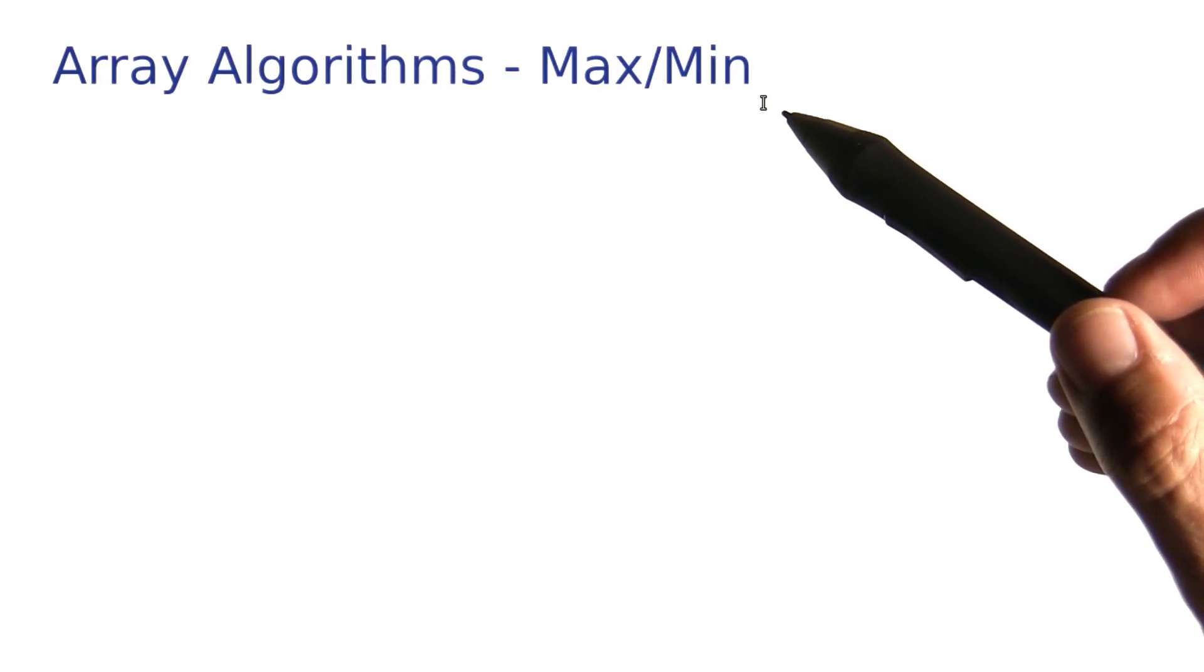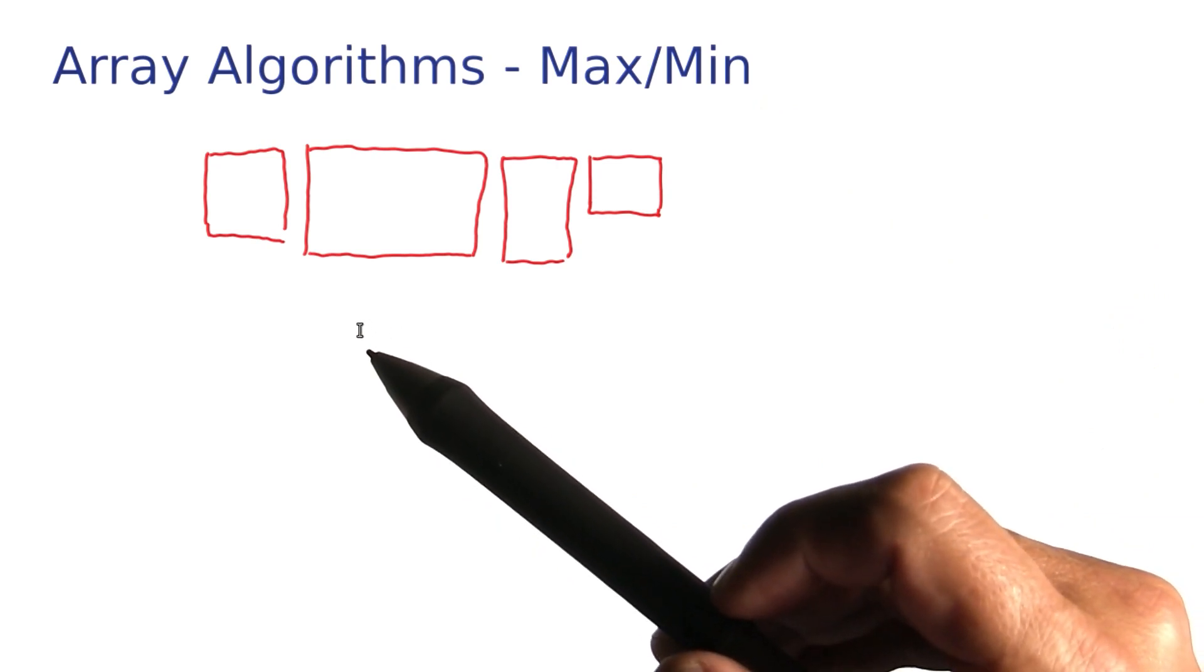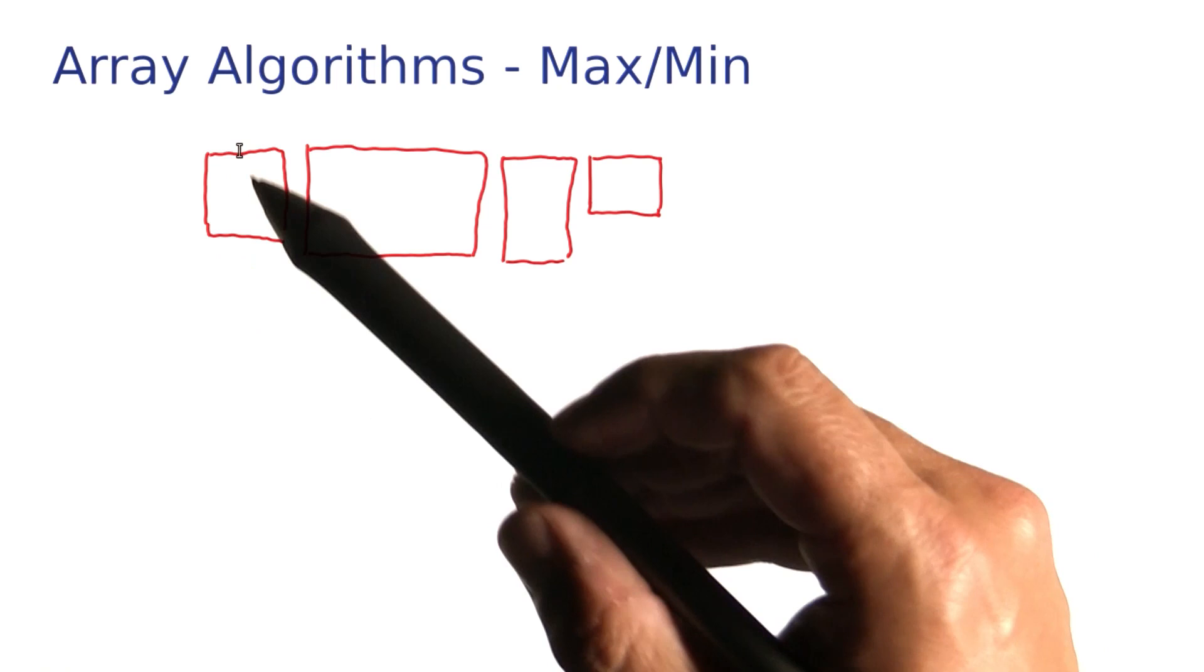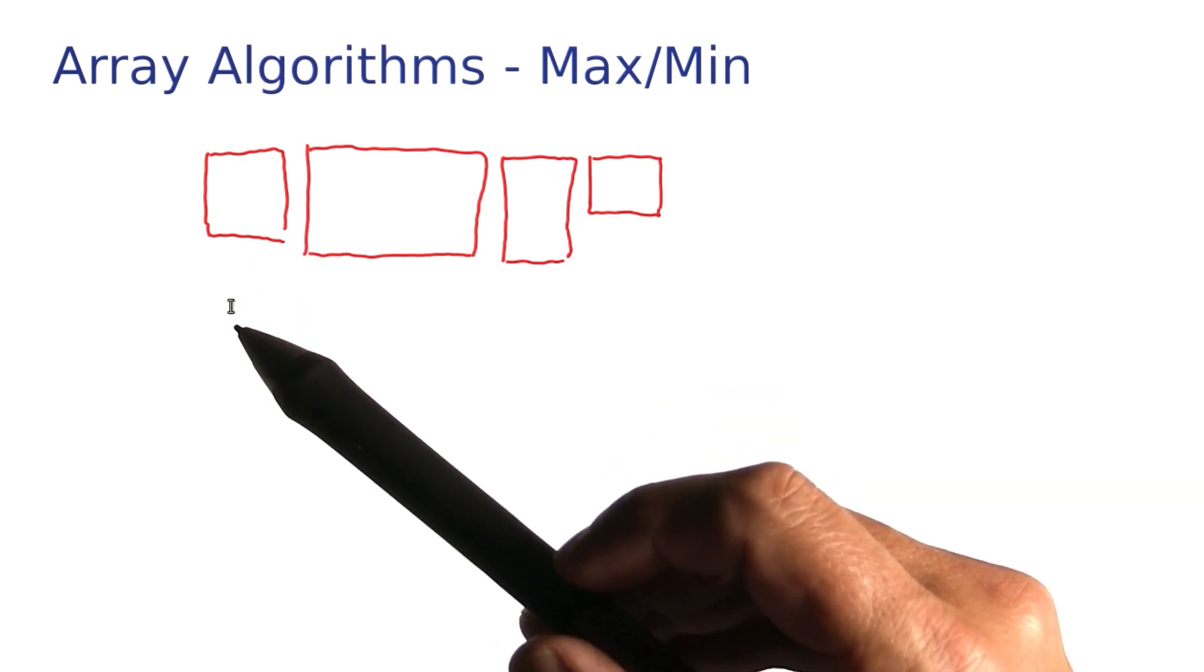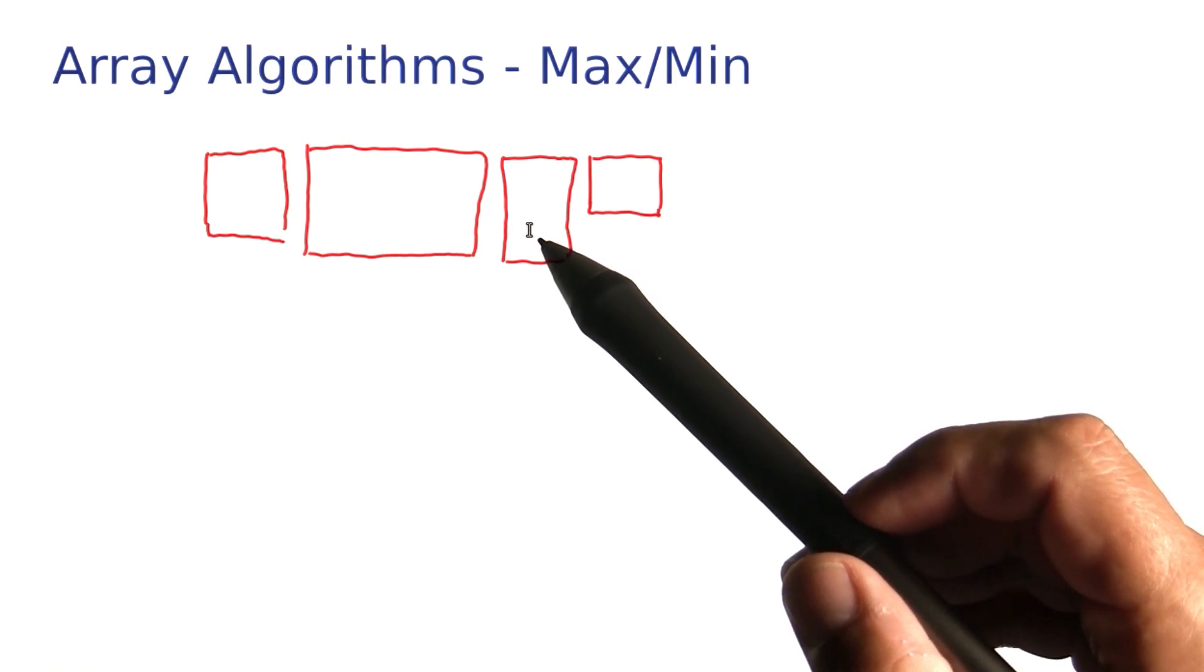In our next algorithm, we want to find the largest element in an array list. Again, let's look at the example of our pictures. We might want to know the largest one to know how much vertical space we need on the wall. Or maybe we want to center them all with respect to the largest one, and then we need to know the largest one first.